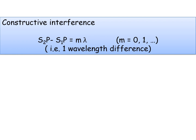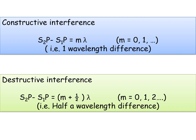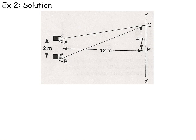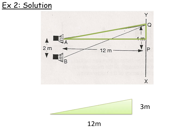In summary: constructive interference is given by PD equals m lambda, and destructive interference is given by PD equals (m plus a half) lambda. Both equations are in your data sheet — make sure you know where they are and are familiar with them. Now we're going to look at some worked examples to help with the calculations. Here's a slightly trickier one involving distances of 12 metres and 3 metres.